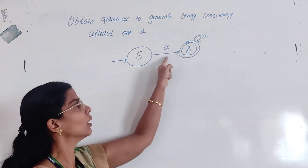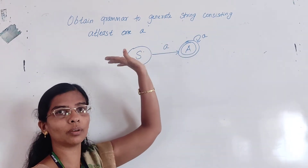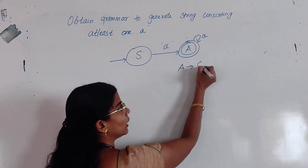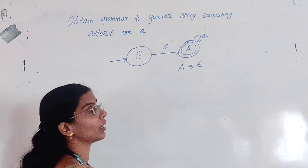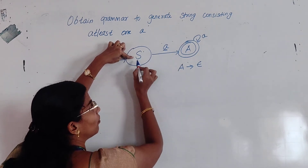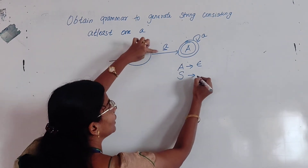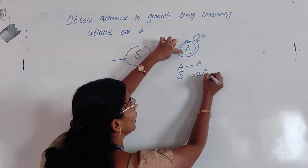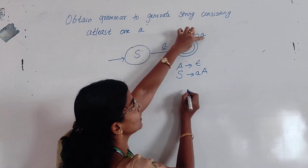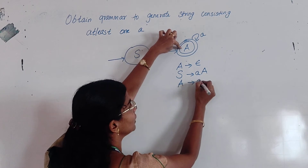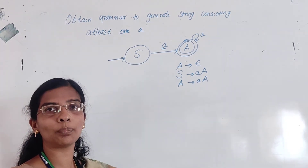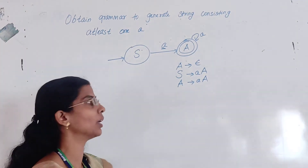At least one A — minimum requirement is one. After that I can have any number of A's, so I put it in a loop. Now, which is the final state? A is the final state, so I will include the epsilon transition. Next, take this input — where does this input start? A. The input is A, and where does it end? Capital A.